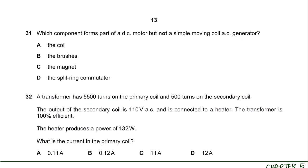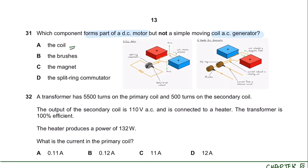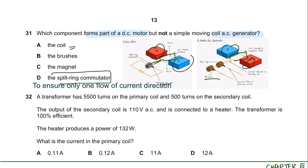Question 31. Which component forms part of a DC motor but not a simple AC generator? The coil is present in both. The brushes are present in both. The magnet is present in both. The split ring commutator is only present in a DC motor. So the answer is D.